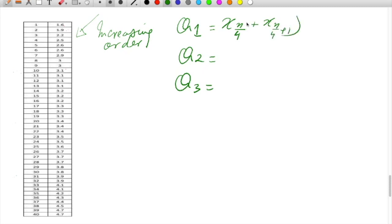This is x 3n by 4 plus x 3n by 4 plus 1 divided by 2. The same we may write it as x n by 2 plus x n by 2 plus 1 divided by 2. Now you see here.